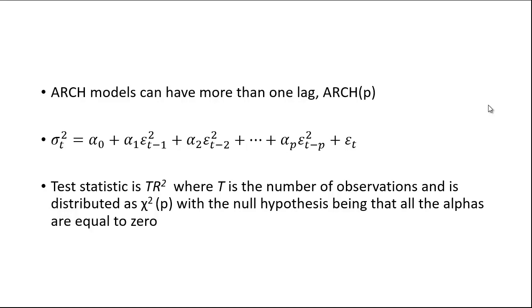Just like with ARMA models, AR and MA models as well, you can have more than one lag. You could have, for example, p lags of the error term here. Having a whole bunch of lags is not necessarily a great model, but you could have two lags or three lags. If you run a model like this, the test statistic is T times R squared, where T is the number of observations, and it's distributed as chi-squared with p degrees of freedom. You're testing the null hypothesis that all those alphas—alpha 1, alpha 2, etc.—are equal to zero.